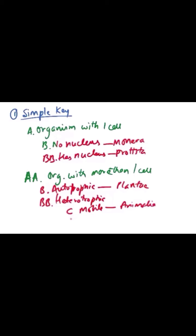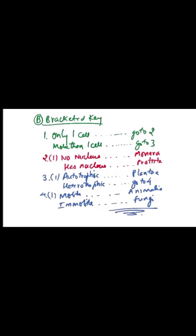Sometimes in the heterotrophic case, you also need to check whether the organism is mobile or not. That is your simple key. Now the second type is the bracketed key. In a bracketed key, you write: first — only one cell; second — more than one cell.